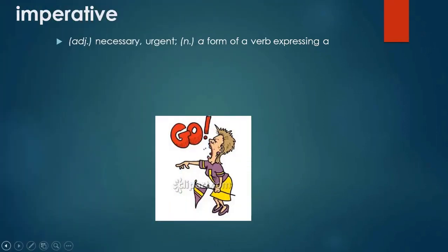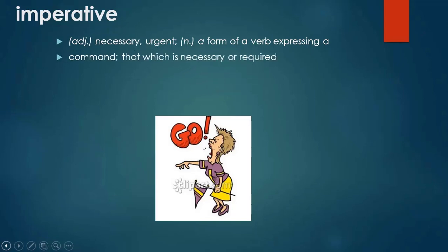Next up is the word imperative. Imperative is an adjective meaning necessary or urgent, and also a noun meaning a form of a verb expressing a command, or that which is necessary or required. For example, it's imperative to go when the traffic light is green.